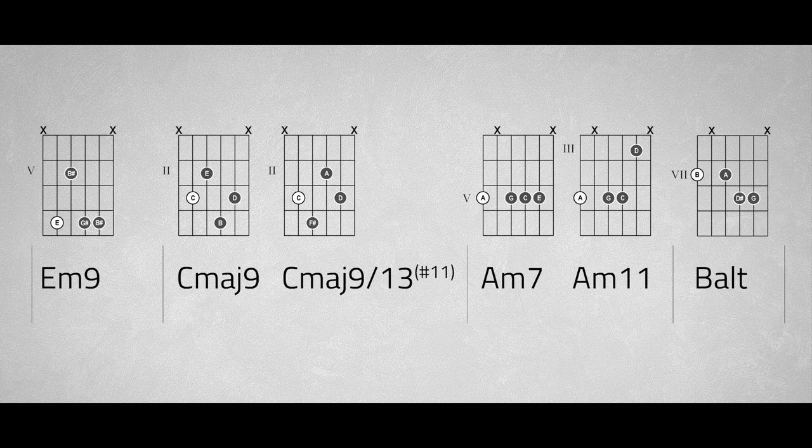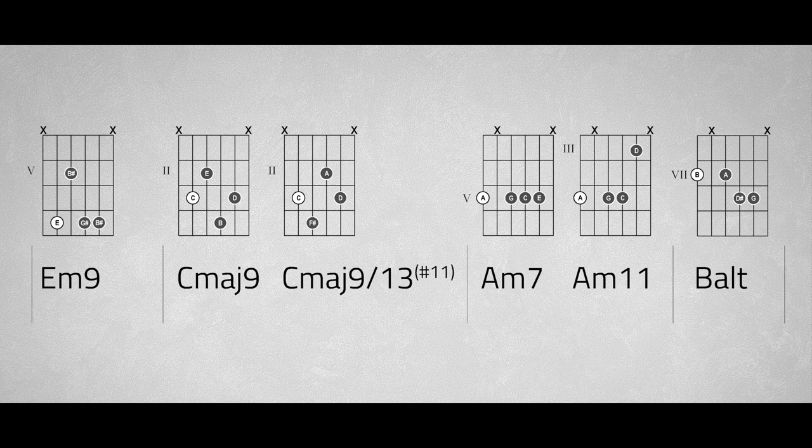We change the B minor 7 chord to a B major chord, a B altered chord to be exact. Now this chord also has an augmented 5th and creates a more interesting transition to the E minor chord.